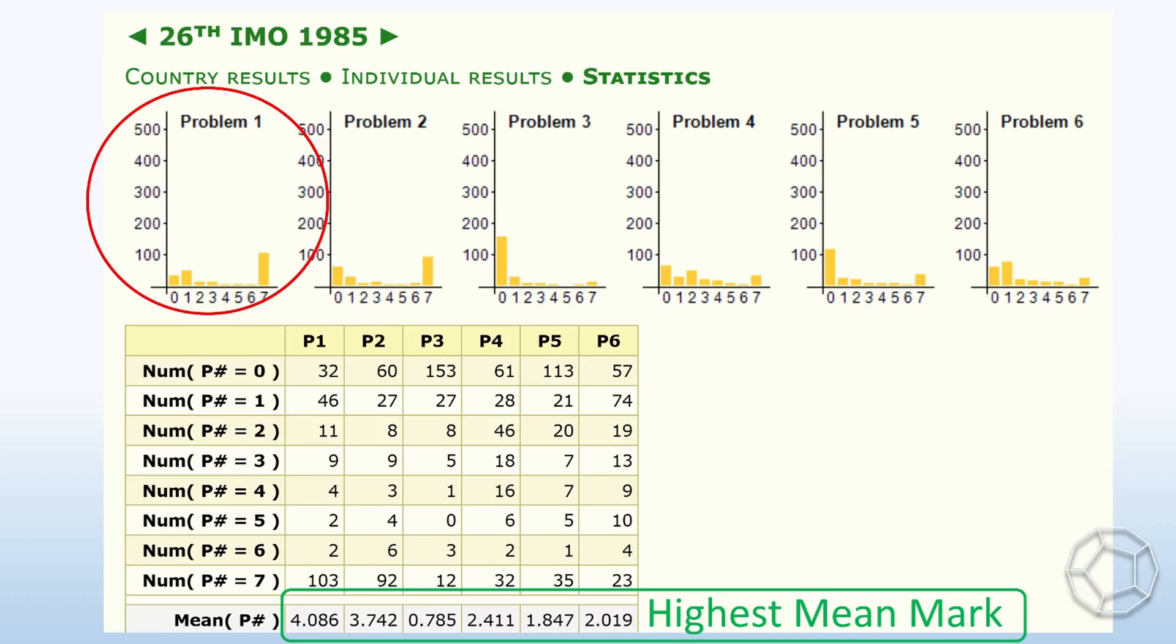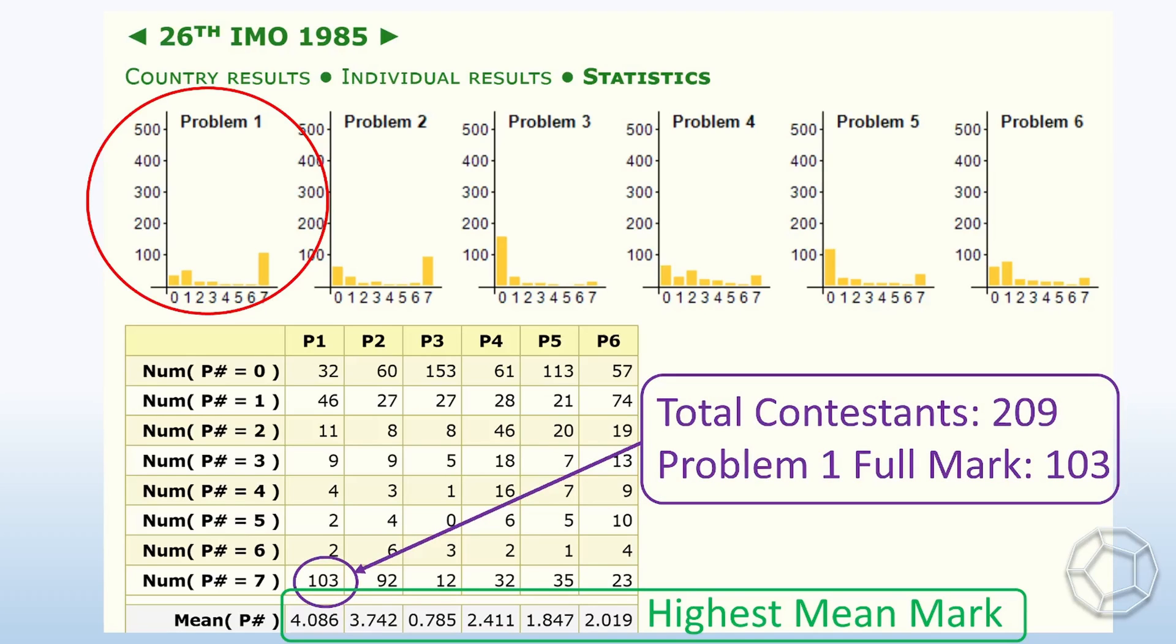In a total of 209 contestants, 103 of them got the full mark. So what is the question about?